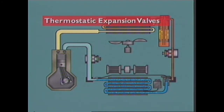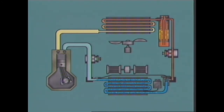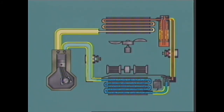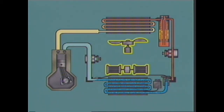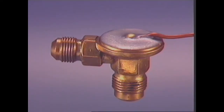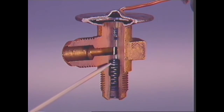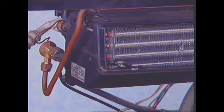This section examines the thermostatic expansion valve system. In a TX valve system, the components necessary for operation are the condenser, the evaporator, the compressor, the receiver dryer, the thermostatic expansion valve (TX valve), connecting pipes and hoses, a thermostat, blower fans, and pressure switches. The TX valve is located at the entry to the evaporator and provides a throttling or restricting function to control the quantity of refrigerant entering the evaporator, while also ensuring complete vaporization of all liquid refrigerant entering the evaporator.